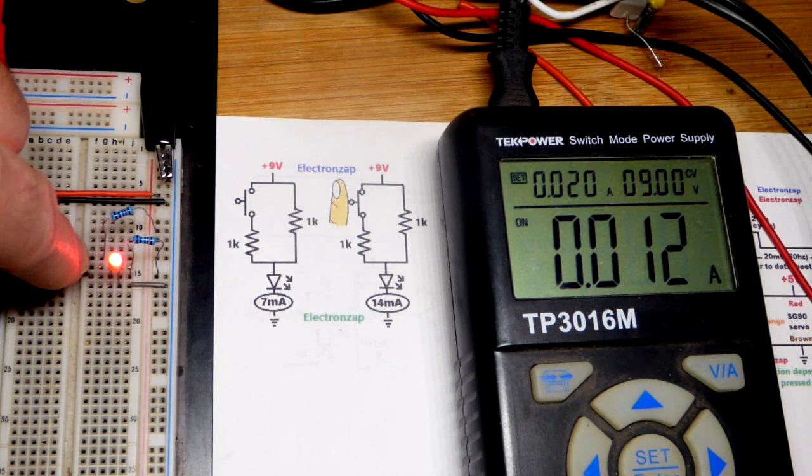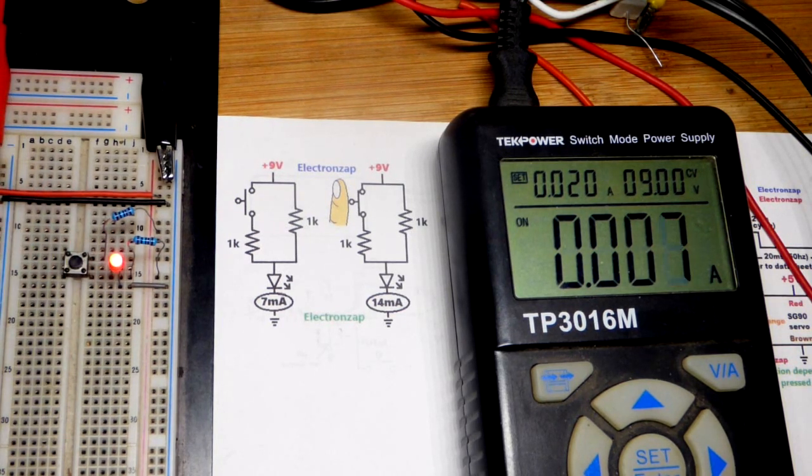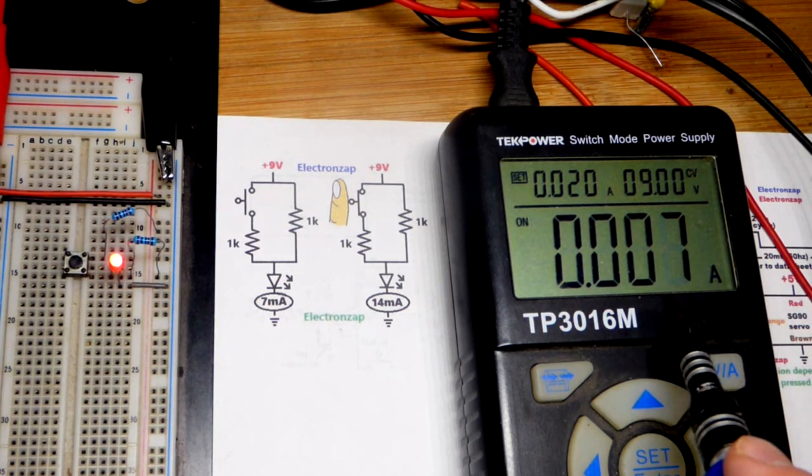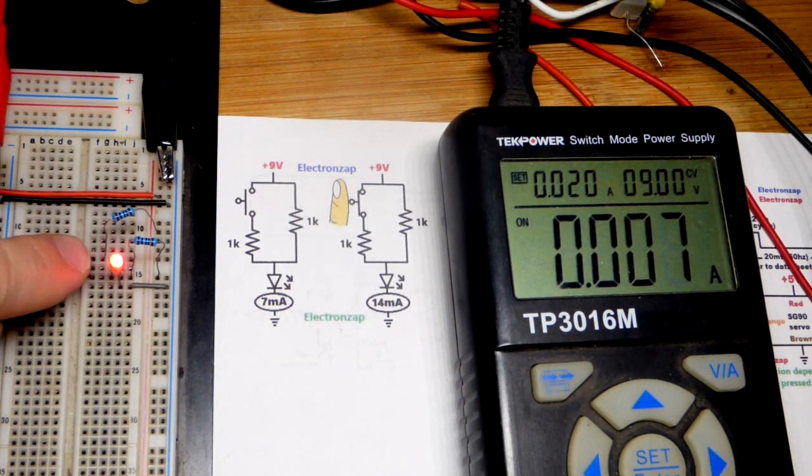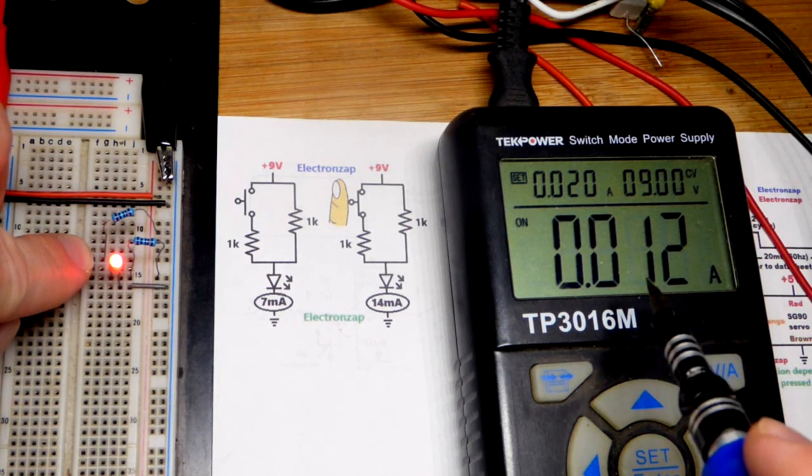You could have a lower current and then increase the current by pressing the button. This seems to go from six to seven milliamps as the LED warms up.